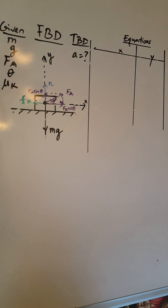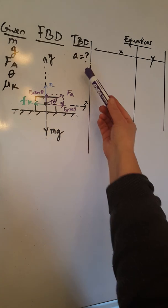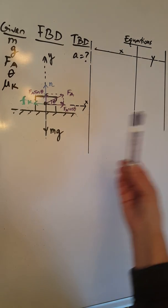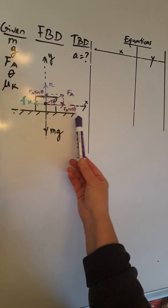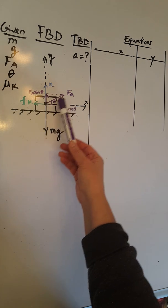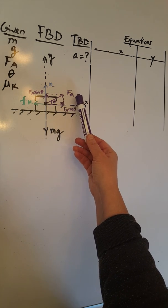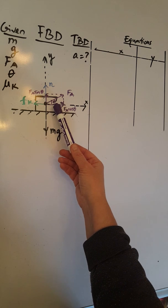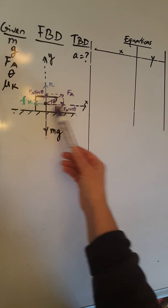This is another problem that we are going to solve today: to calculate the acceleration of an object that's moving on a flat horizontal surface with friction under the influence of a non-horizontal force FA that makes an angle theta with the horizontal or with the x-axis.